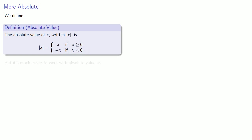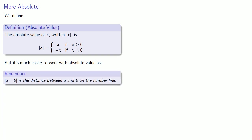But it's much easier to work with absolute value using the following idea: the absolute value of a minus b is the distance between a and b on the number line.